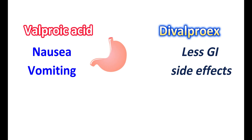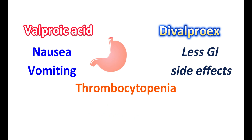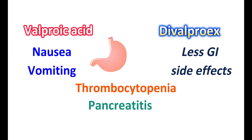Apart from GI effects, both formulations share several common side effects. One is hepatotoxicity, commonly observed in young children, so liver function should be monitored with both medications. They can also produce weight gain and hair thinning. Thrombocytopenia is a hypersensitivity reaction observed with both medications. In some people, both drugs can cause pancreatitis, producing severe abdominal pain. Both medications are teratogenic and should be avoided in pregnant women, as they can cause cognitive problems in newborns.